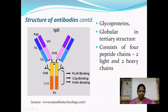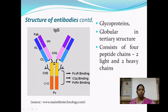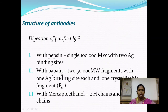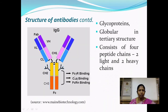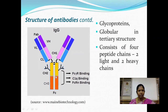Each heavy chain has four domains, and each light chain has two domains. The heavy chains and light chains are held together by disulfide bonds, and the two heavy chains are also connected by disulfide bonds. When digested with papain, two antigen binding fragments are obtained, each with a molecular weight of around 50,000 daltons. Papain causes destruction of a specific linkage, thereby releasing three separate fragments, including the crystallizable fragment.